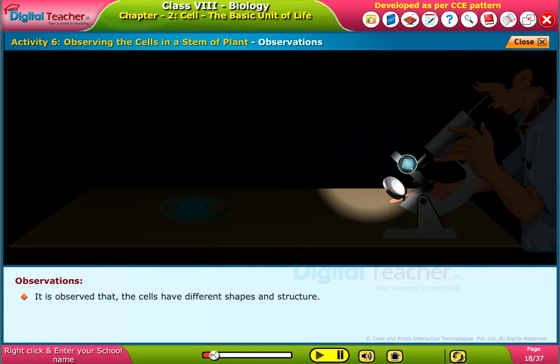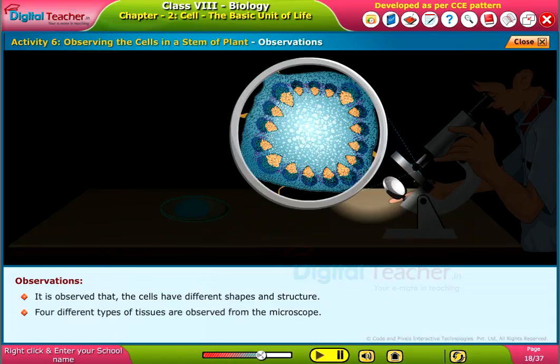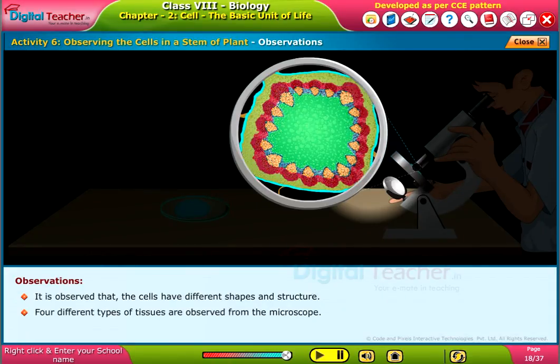It is observed that the cells have different shapes and structures. Four different types of tissues are observed from the microscope.